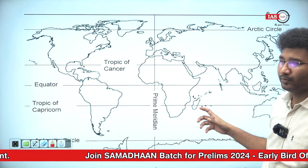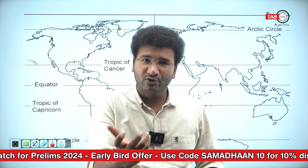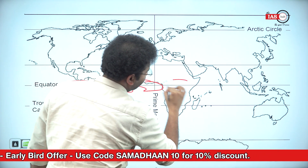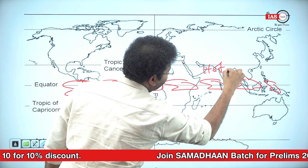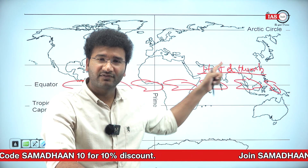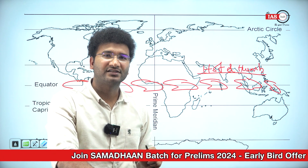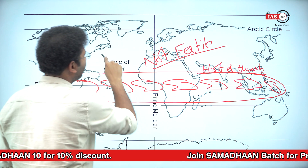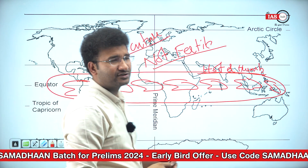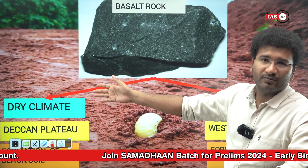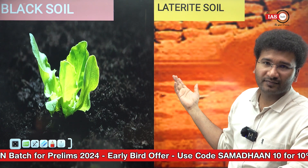Looking at the equatorial region — the climate there is hot and humid. But because there is so much rain, any soil present simply washes off. Because of that, the equatorial type of climate does not lead to the formation of very fertile soils. The soil present there is infertile, and therefore agriculture possibility is very less in the equatorial region.